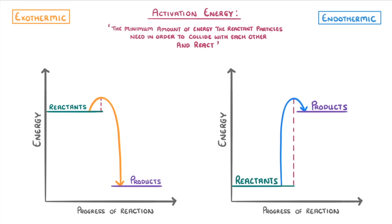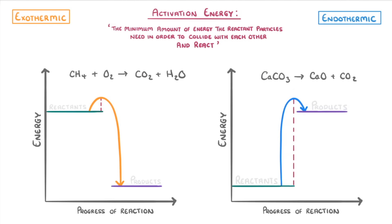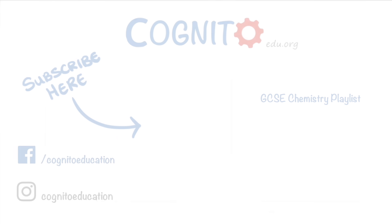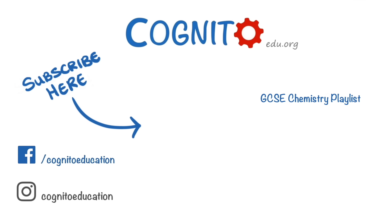The very last thing we need to say is that if you were drawing a reaction profile for a specific reaction, like the ones we discussed earlier, then instead of just writing reactants and products on the lines, we can actually put the chemicals from our equations. Anyway, that's all for now — hope you enjoyed it, and we'll see you next time.